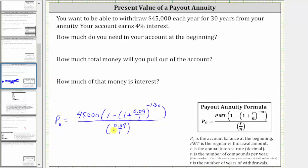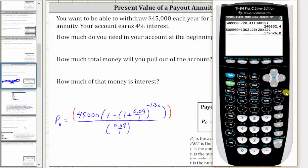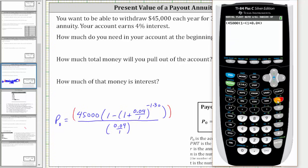Now we'll go to the calculator. When entering a fraction, include parentheses around both the numerator and denominator to make sure it's interpreted correctly. So we enter: open parenthesis 45,000, open parenthesis one minus, open parenthesis one plus 0.04 close parenthesis raised to the power of negative 30 — use the negative key, not minus, or you'll get an error — then press the right arrow to exit the exponent, close parenthesis, close parenthesis for the numerator, divided by open parenthesis 0.04 close parenthesis, then press Enter.